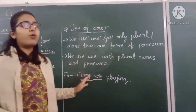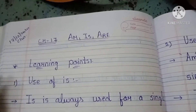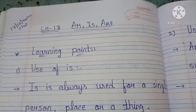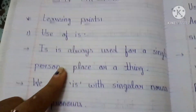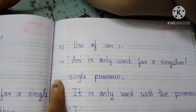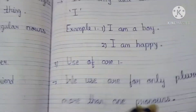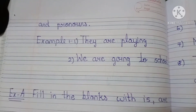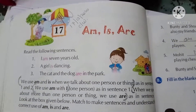Now all these learning points you need to write in your classwork (CW). First of all, mention the date and CW, then the chapter name — Chapter number 17, Am Is Are. Next, write learning points: Number one, use of 'is' with example; next page, use of 'am' with points and example; and use of 'are' with points and example. You need to complete all of this.